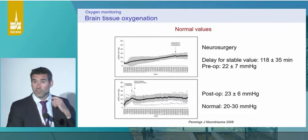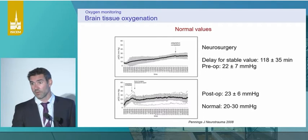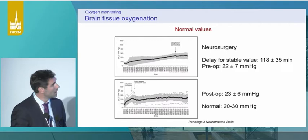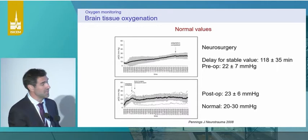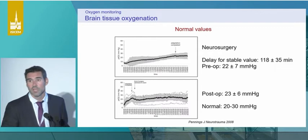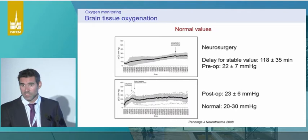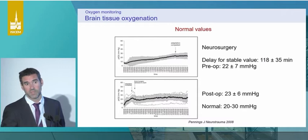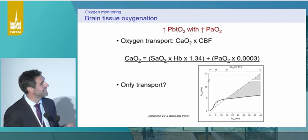What are the normal values? Normal values have been established in patients undergoing neurosurgery. There is a stabilization delay of around two hours for stable measurement. In the preoperative setting, the normal value is higher than 20 mmHg. We consider normal values to be between 20 and 30 mmHg. For abnormal values, there is no clear consensus, but most protocols begin to treat patients under 20 mmHg and consider a critical threshold when PbtO2 goes below 15 mmHg.